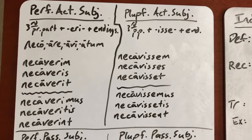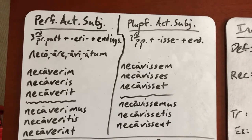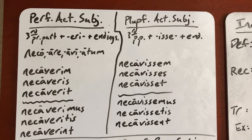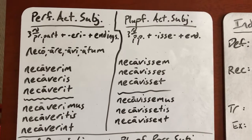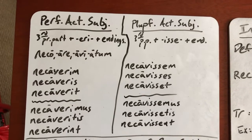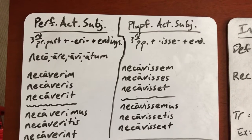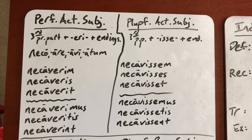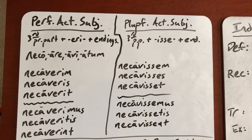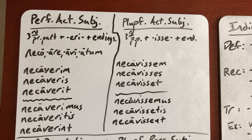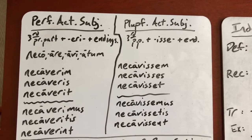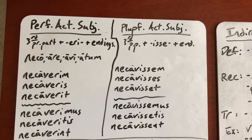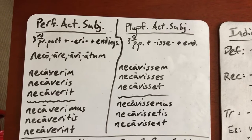You've got actually four new charts, but they're all pretty simple and straightforward. So the perfect active subjunctive and the pluperfect active subjunctive — both of these are going to use the third principal part, and third principal parts you'll notice almost always end in an I. So our old friend neco, necavi, necatum — what you do is you just chop off that long I, and that gives you the base or stem.